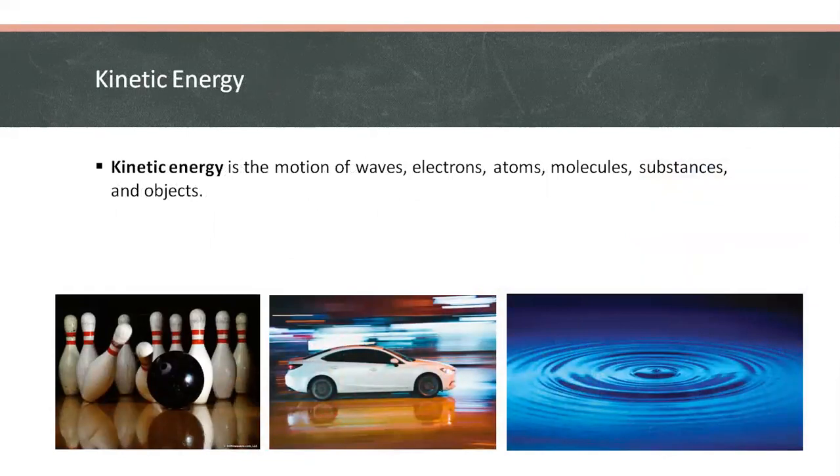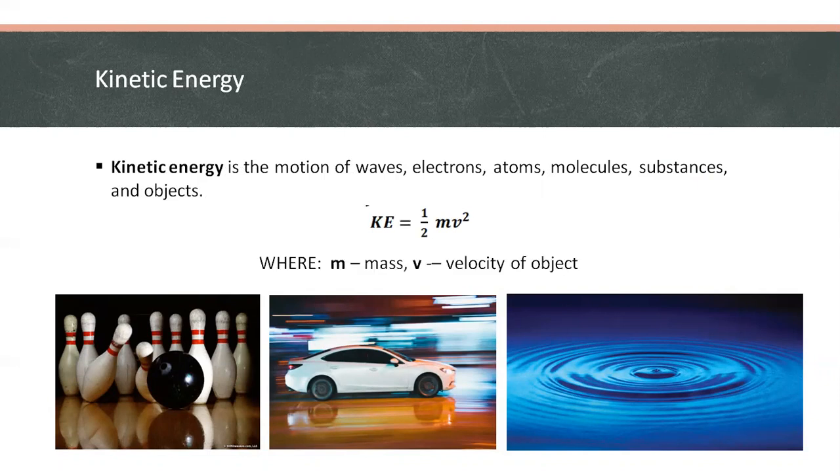The second category is kinetic energy, which is due to the motion of waves, electrons, atoms, molecules, substances, and or an object. We can compute kinetic energy with this formula, equal to one-half times mass times velocity squared. So meaning, the larger the mass, the greater the kinetic energy, or the slower the motion of an object, the lower the kinetic energy.